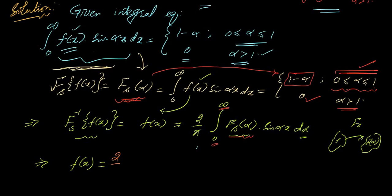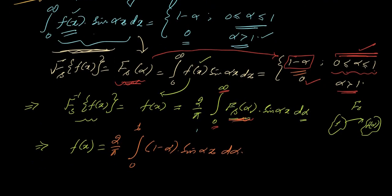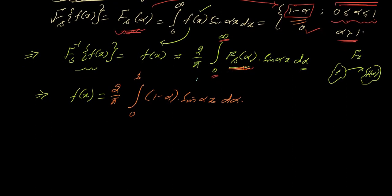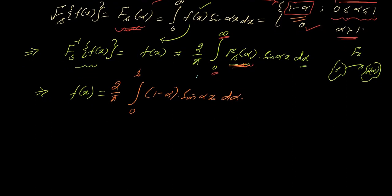It can be written as 2 over pi and 0 to 1, on which f_s alpha is equal to 1 minus alpha, so 1 minus alpha into sin of alpha x and d alpha. Now it is an integral containing two functions: one is algebraic, second is trigonometric. It can be taken as first and second, applying integration by parts.